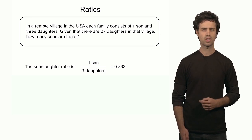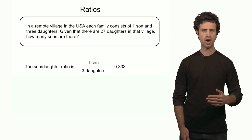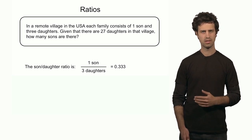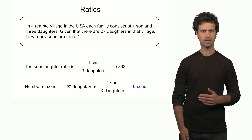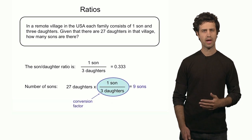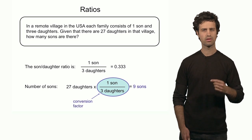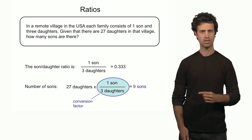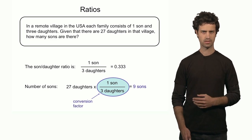Now using this ratio, I can convert the unit of daughters into the unit of sons. So let's take 27 daughters and multiply that by this ratio. This ratio is now a conversion factor. You see that the unit of daughters is striking out — I convert the unit of daughters into the unit of sons. 27 divided by 3 equals 9 sons.